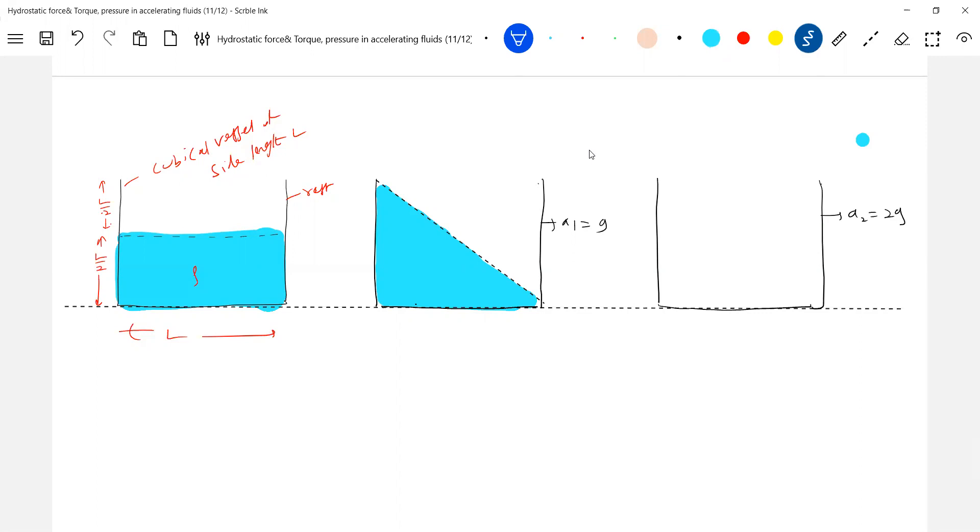So what is this theta? Theta one will be 45 degrees. Now I'll make the acceleration more than that. So where's the free surface? Same discussion what we had.